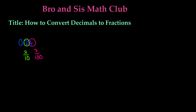So we have these two fractions. Now in order to convert 0.27 into a fraction, we can add these two fractions together. So if we go ahead and rewrite this: 2 tenths plus 7 over 100. We know that when we're adding fractions, we have to have the same denominator.